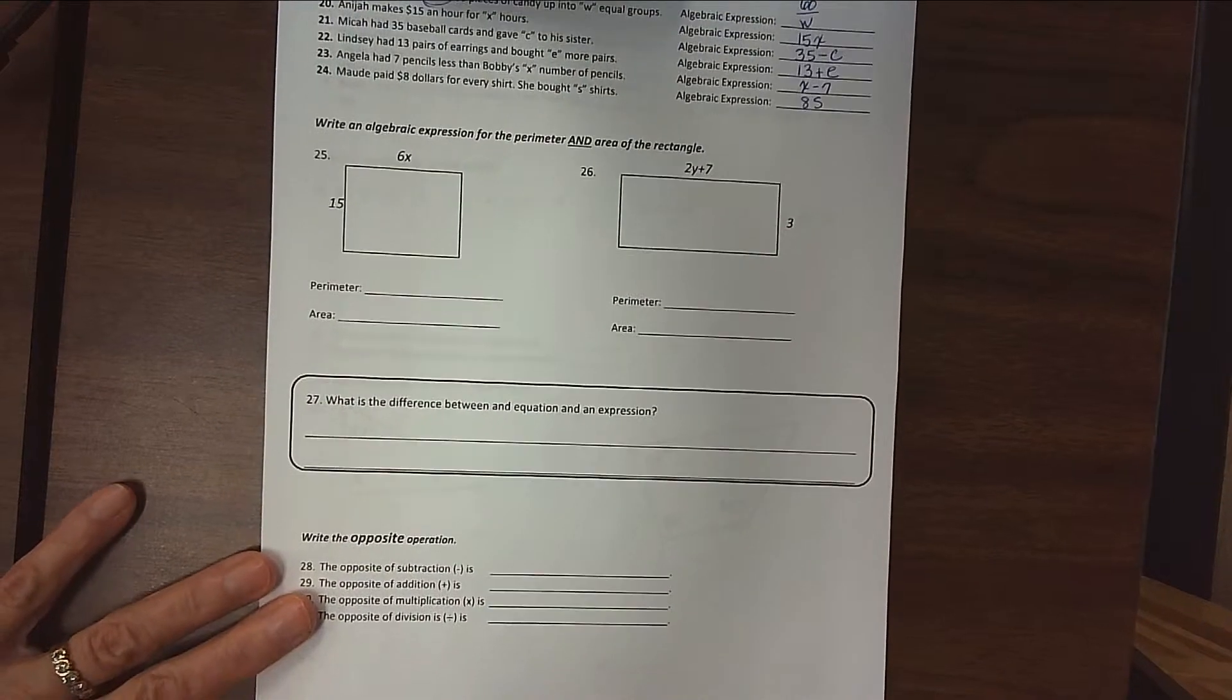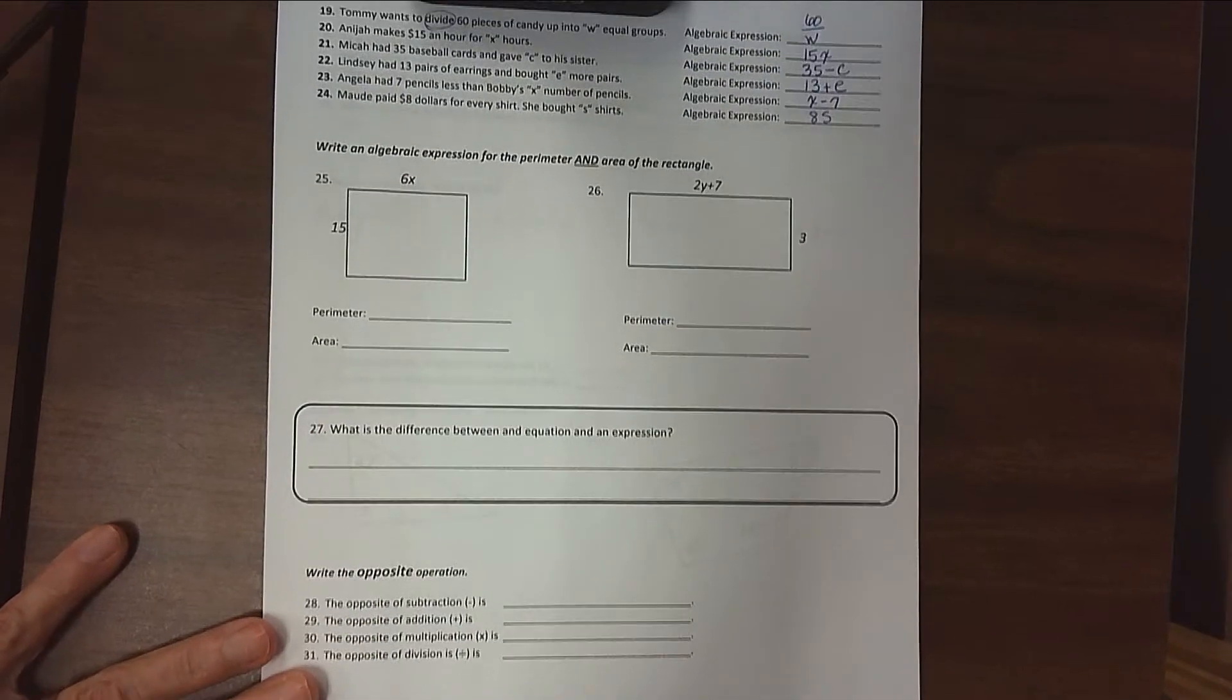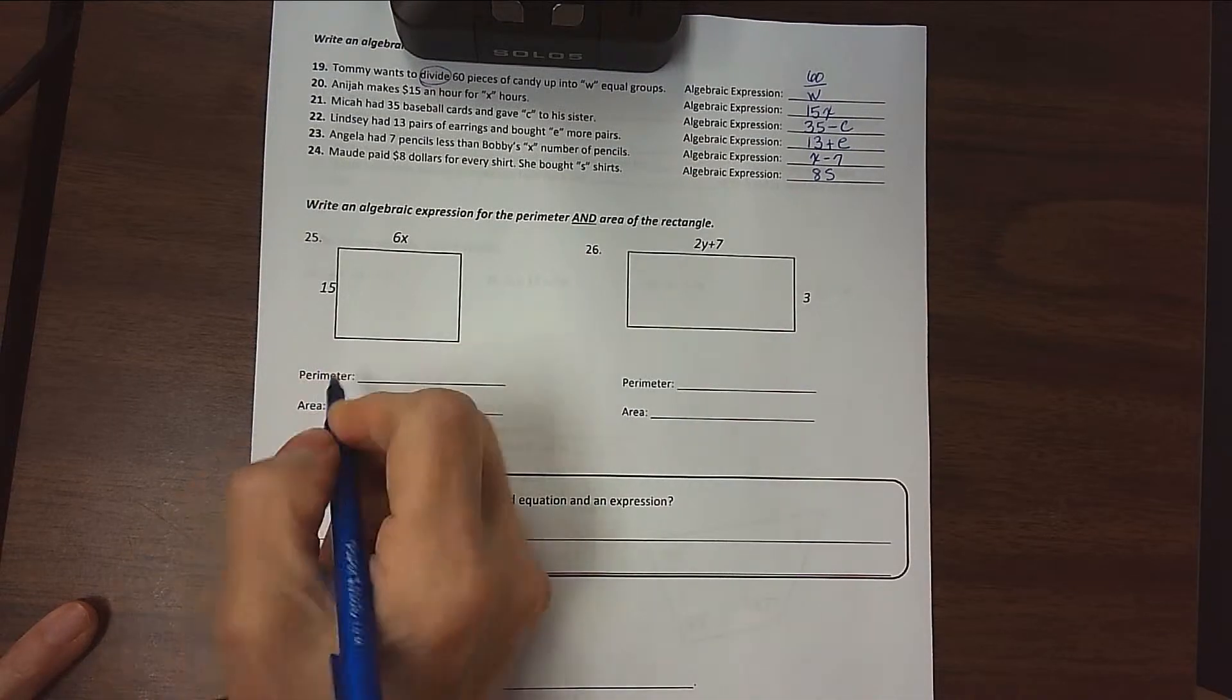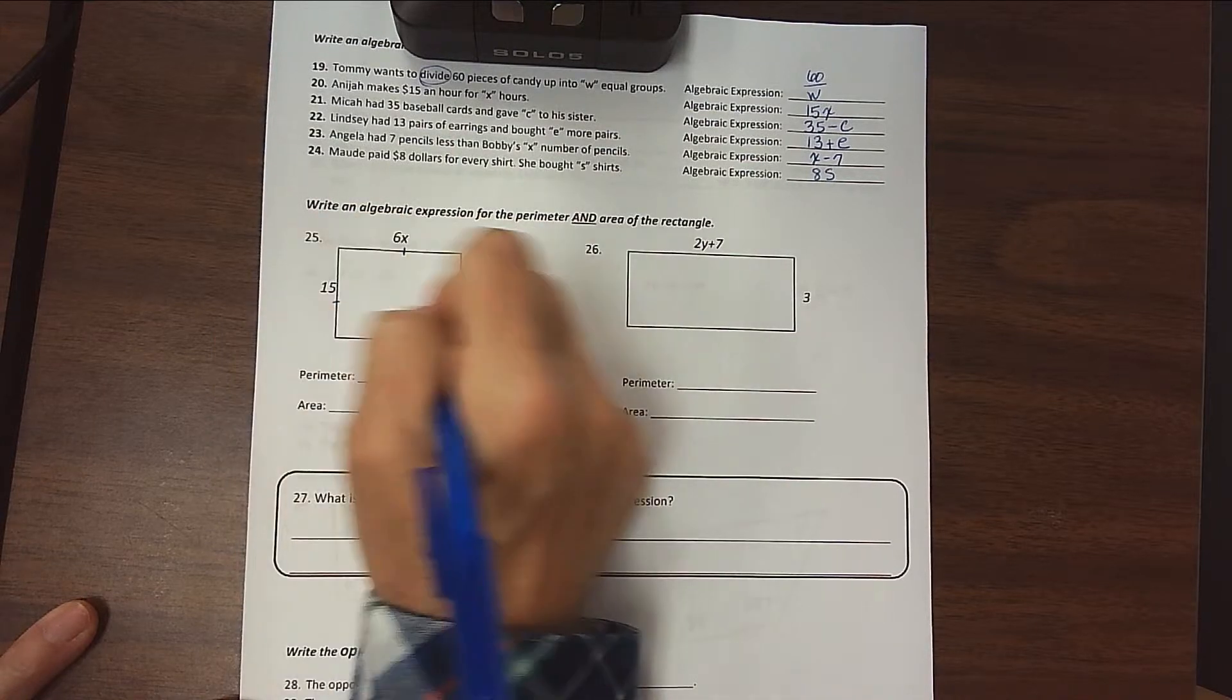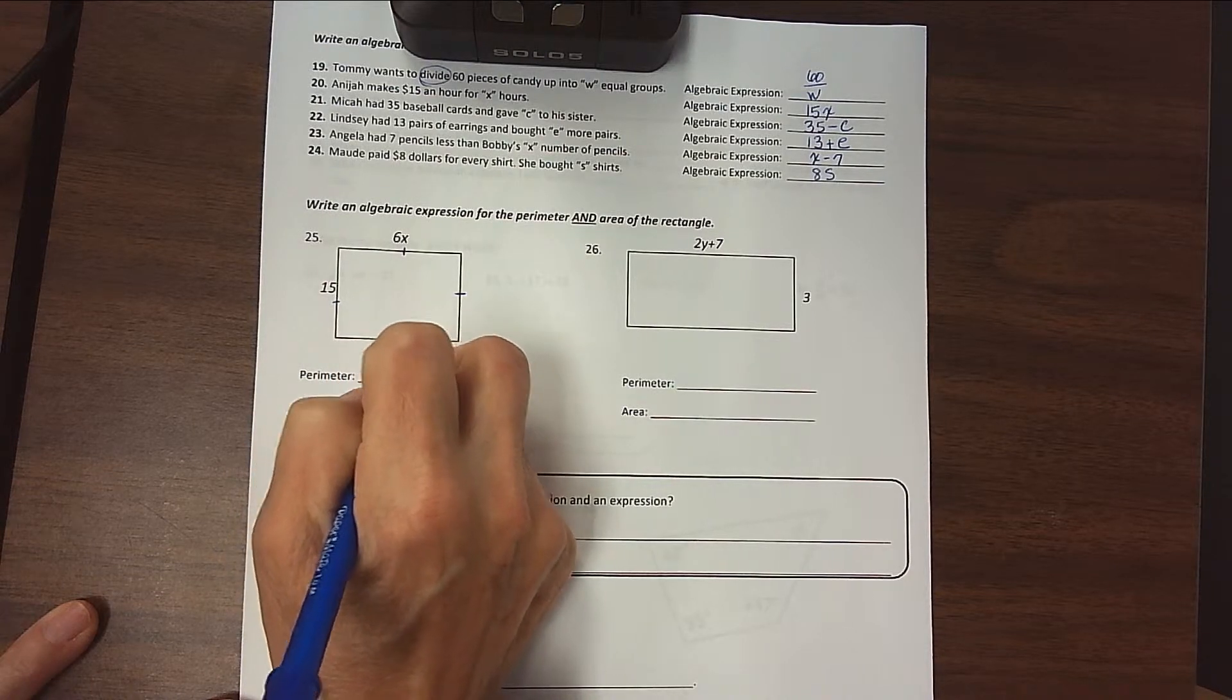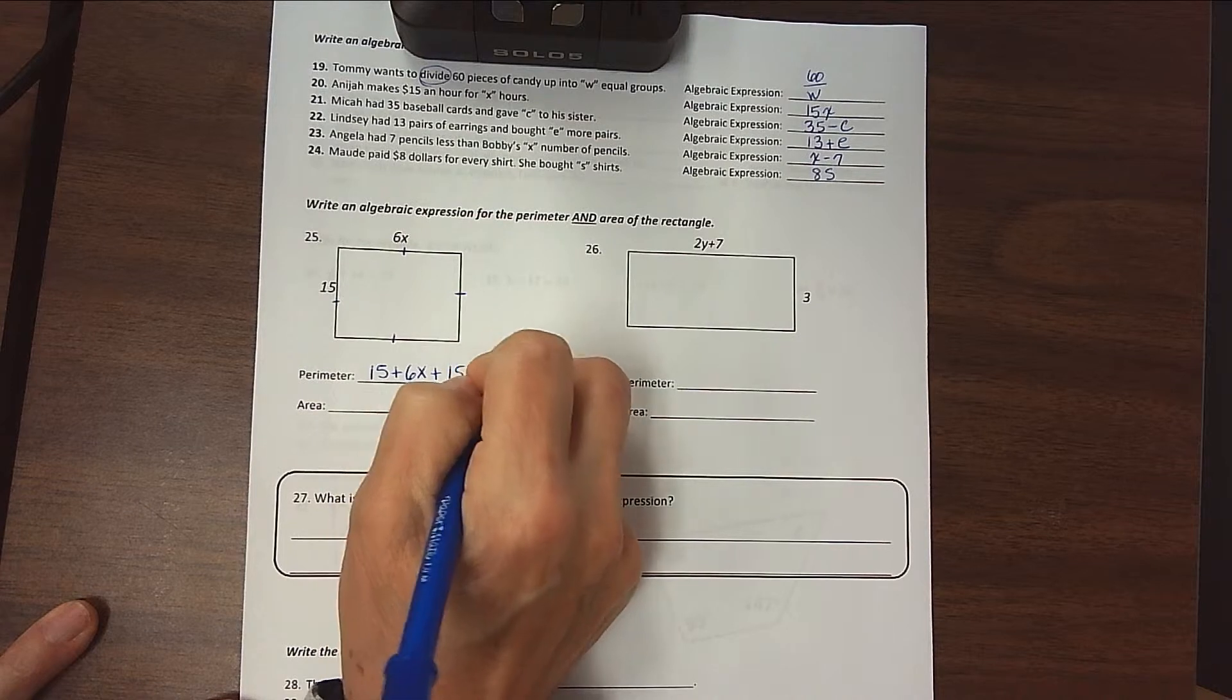All right, next section. Write an algebraic expression for the perimeter and area of the rectangle. Remember, we're not going to be able to get an answer for these, we're just writing expressions. For the first one, perimeter is the distance around, so we'll add 15 plus 6X plus 15, because these have to match, plus 6X. So we'll do 15 plus 6X plus 15 plus 6X.